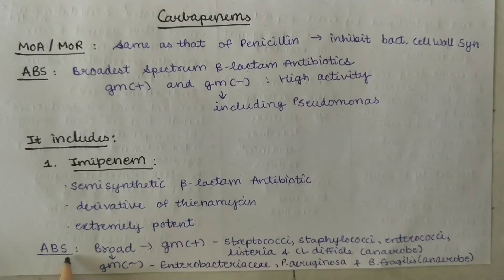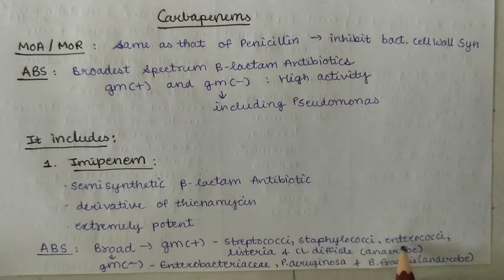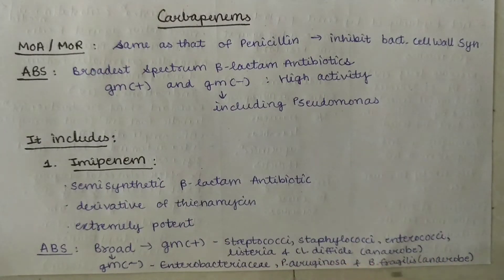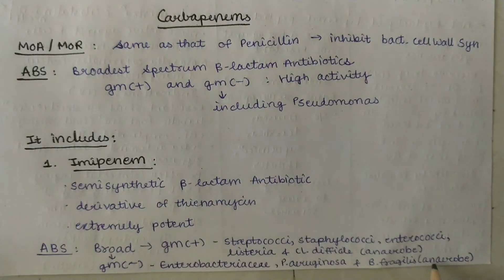Antibacterial spectrum: it is a broad-spectrum antibiotic active against gram-positive organisms like streptococci, staphylococci, enterococci, Listeria, and Clostridium difficile (an anaerobe), and also gram-negative organisms like Enterobacteriaceae, Pseudomonas aeruginosa, and Bacteroides fragilis (an anaerobe).